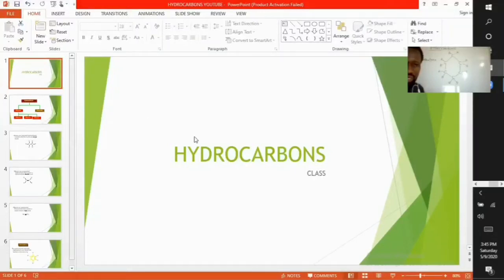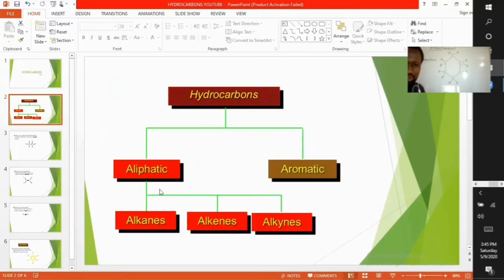Substances that contain only hydrogen and carbon atoms are called hydrocarbons. We have two classes of hydrocarbons. They are aliphatic hydrocarbons and aromatic hydrocarbons.